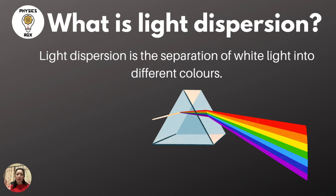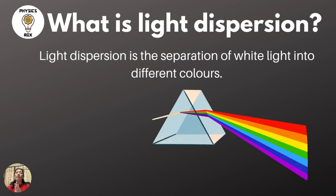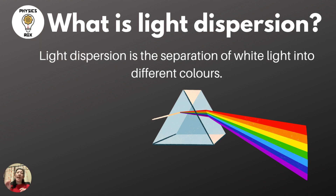Why does white light separate into those different colours? You must understand that in physics, we don't recognise white or black as colours. In physics, when we say colour, we're referring to the individual colours in the rainbow — for example, blue, green, orange, or red. White and black are not recognised as colours.